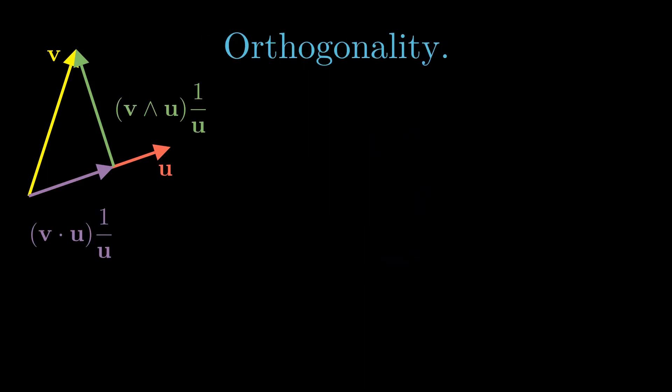Let's now show that our projection expression and our rejection expression are, in fact, orthogonal. The product of two vectors u and v is the dot product, a scalar term, plus the wedge product, a bi-vector term. We can write this explicitly as u times v equals the scalar part of u v plus the bi-vector part of u v.